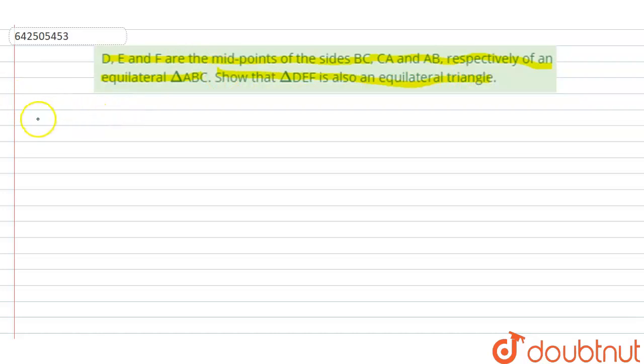Let us draw the figure first. Now what is given? Equilateral triangle ABC. And after that, D, E, F are the midpoints which also makes a triangle, so DEF. D is the midpoint of side BC, E is the midpoint of side CA, and F is the midpoint of side AB.